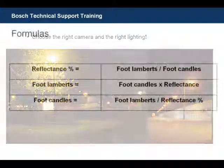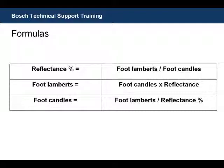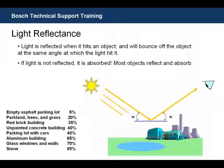The last topic that we want to cover in this module is reflectance. One characteristic of light is that it travels in a straight line. When it hits an object, it is reflected, and it will bounce off of that object in the exact same angle in which it struck the object. If light is not reflected, it is absorbed. Most objects reflect and absorb, but in different degrees. Your choice of CCTV camera needs to be able to compensate for the reflectance factor of any outdoor or environmental surface.